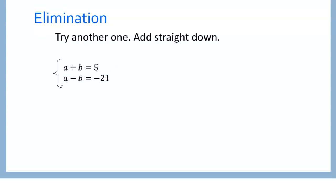Let's try another one. With elimination, we're going to add straight down and see what we get — ideally one variable will disappear. a plus a gives us 2a. b plus negative b — those cancel out, just a 0. 5 minus 21 will be negative 16. Very simple to get that first variable value — we just divide both sides by 2 and get a equals negative 8.